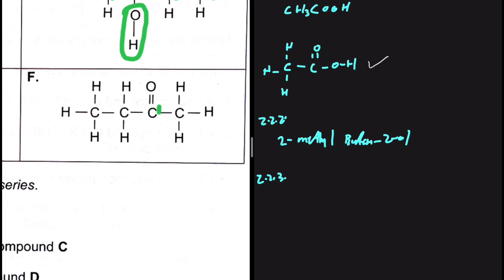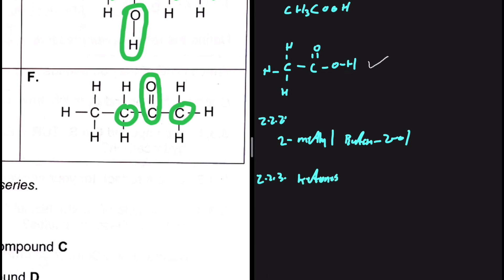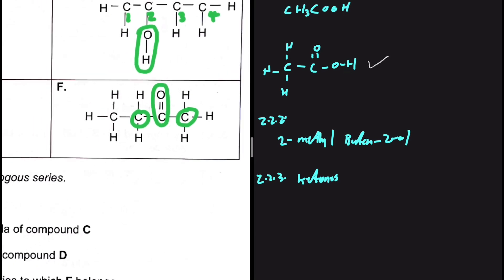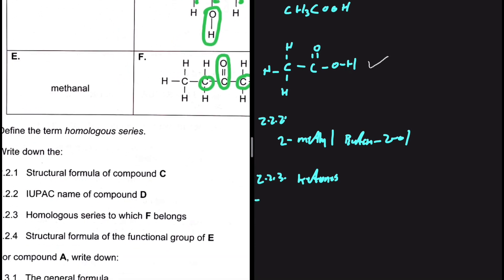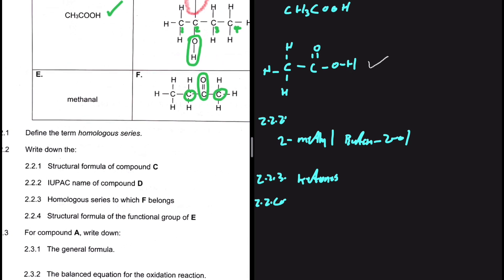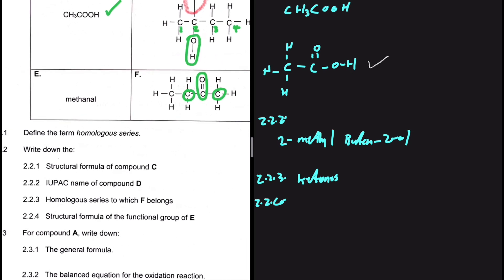For 2.2.3, we need the homologous series to which compound F belongs. Looking at F, the carbon bonded to the oxygen is bonded to two other carbons on either side — it is sandwiched. That is the functional group of ketones. If there were only one carbon on either side it would be an aldehyde, but here we have ketones.